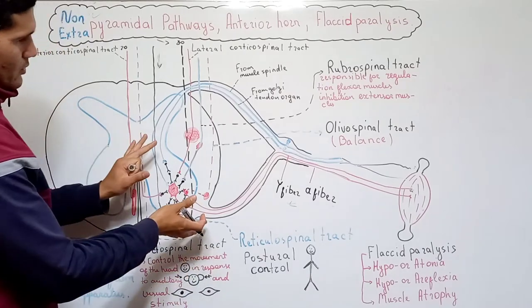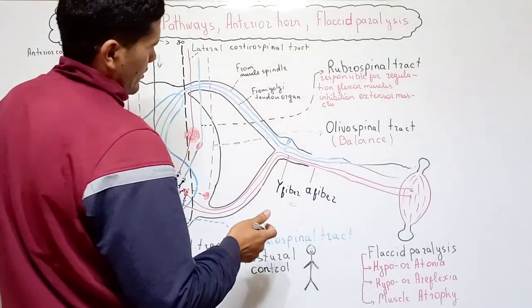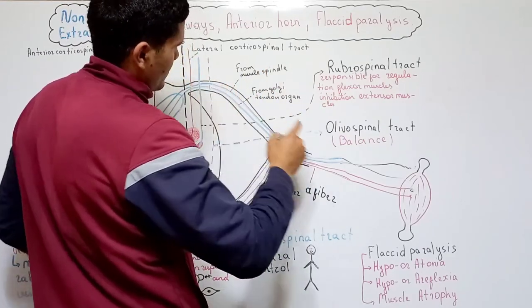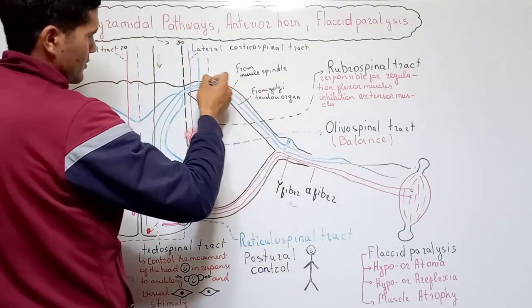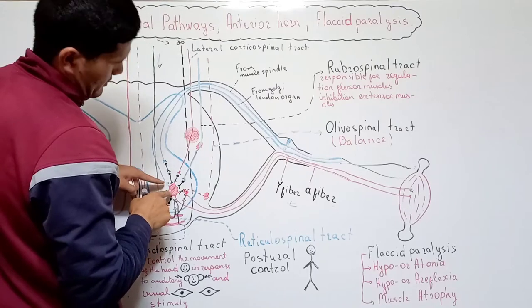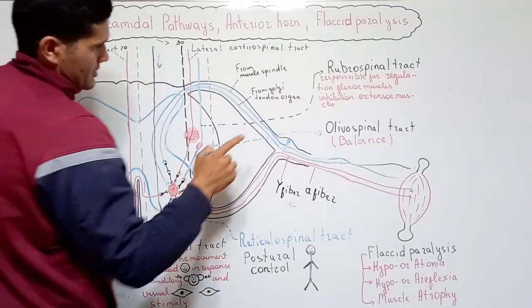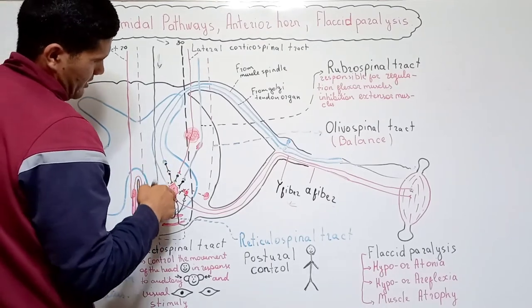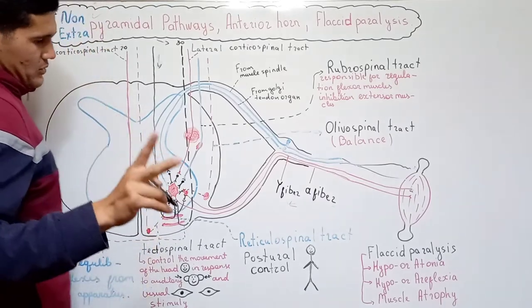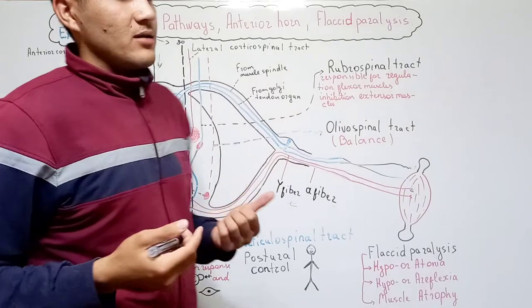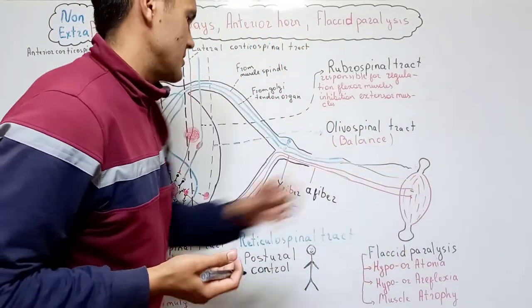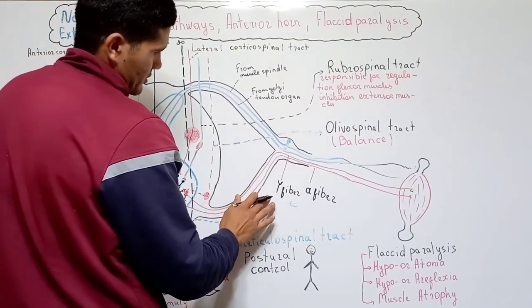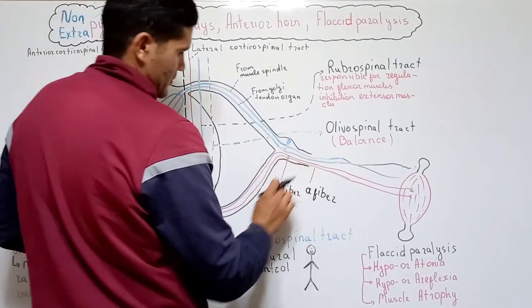Now let's talk about the anterior horn. In our previous lesson we talked about afferent fibers. The first one is 1A fibers from muscle spindles, which carry information from the muscle spindles and can directly bind to the alpha motor neurons without any interneurons. Another fiber comes from the Golgi tendon organs — in contrast to the muscle spindle fibers, it connects with the alpha motor neurons via two interneurons. Their function is providing information about the length and tone of the muscles. There are also gamma motor neurons and alpha motor neurons, with their fibers being the gamma fiber and alpha fiber respectively.